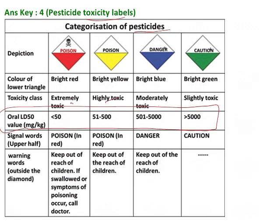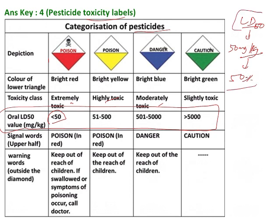What is LD50? You have studied this in pharmacology. LD50 is nothing but lethal dose 50. For example, in the first category, it will take less than 50 milligrams per kg to kill 50 percent of a given population. The proper definition: lethal dose 50 is the amount of substance required to kill 50 percent of the population.